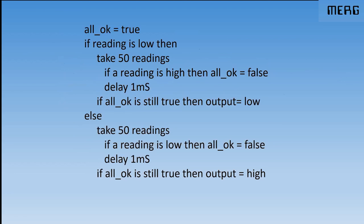And the same thing here, if your initial reading was high, take another 50 and if they're all high, that's fine. If any one goes low, something's gone wrong. Now that pseudo code works both therefore for noise suppression and switch bounce. It's more useful. It does both.